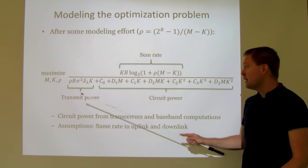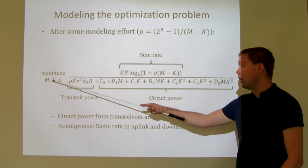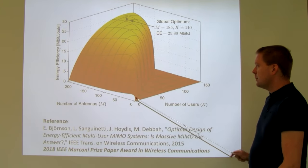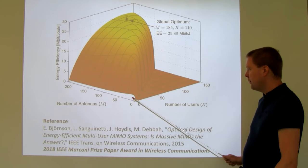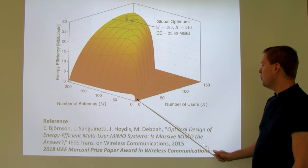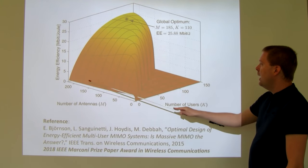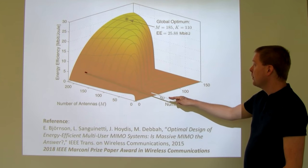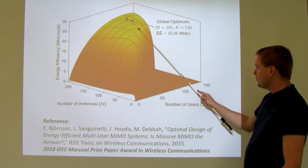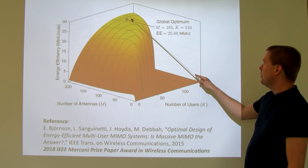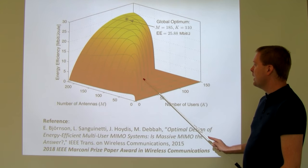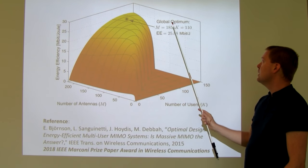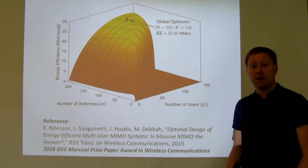The important point is that we can obtain the SINR expression, the transmit power expression, and the circuit power expression, write up the energy efficiency, and maximize it. In the simulation, I show the number of antennas from 1 to 200 on one axis, the number of users from 1 to 150 on another, and the resulting energy efficiency. The surface has a clear shape — it increases with number of users up to a point, then decreases; the same with antennas. The optimum in this case is 185 antennas and 110 users.